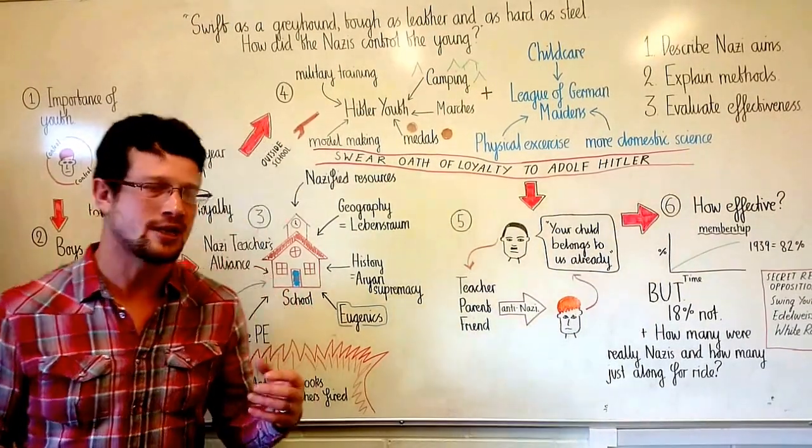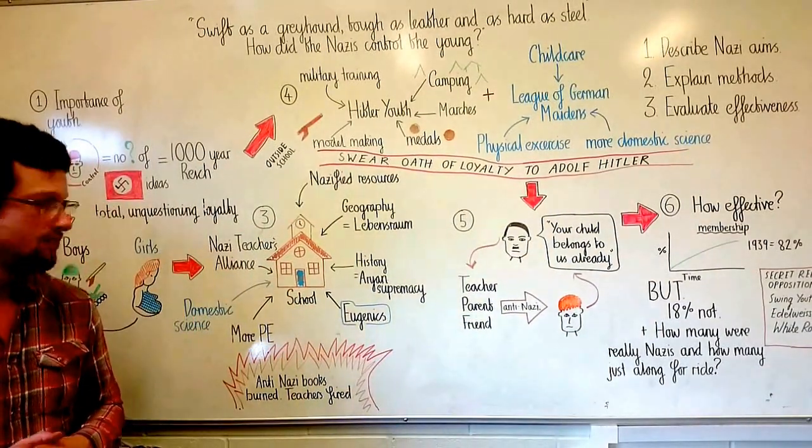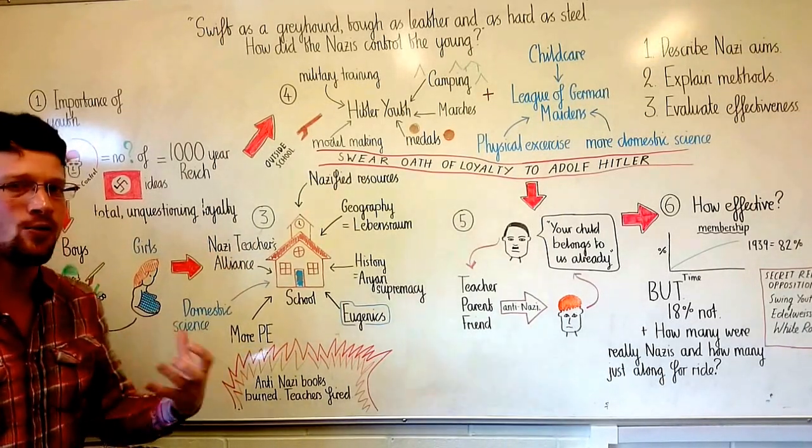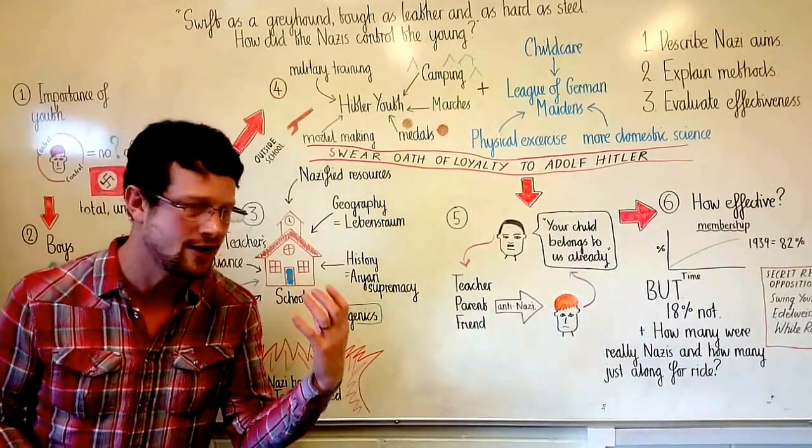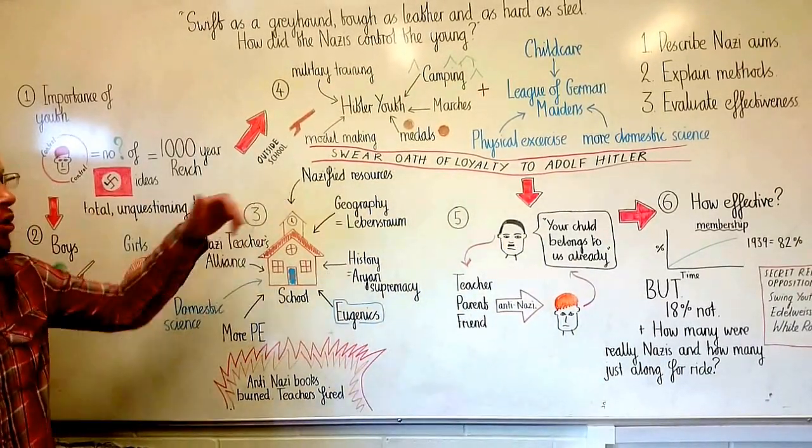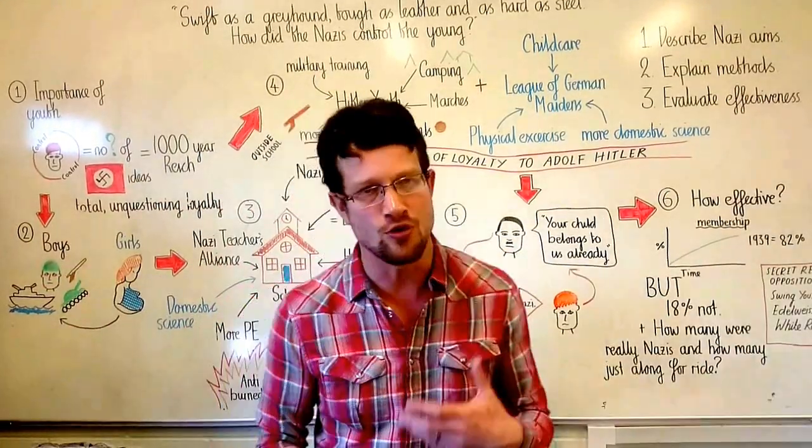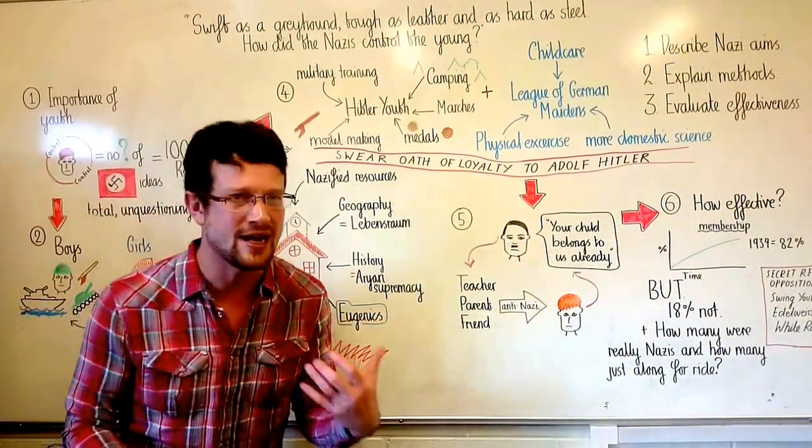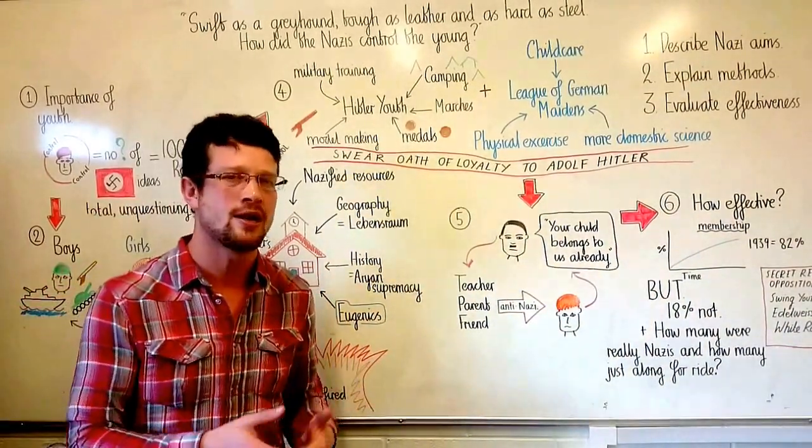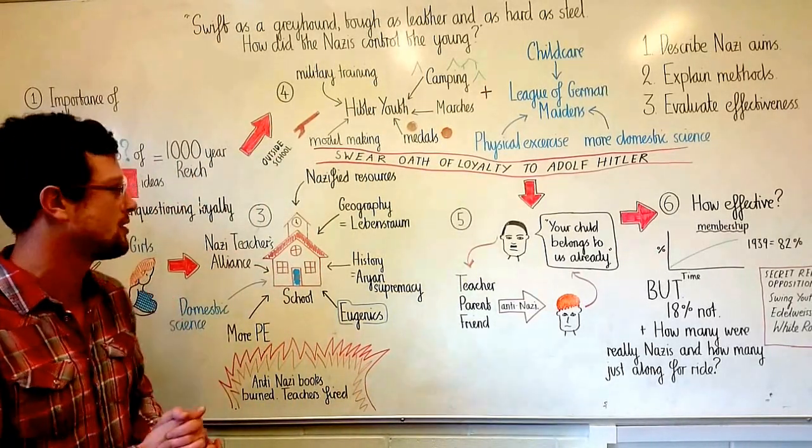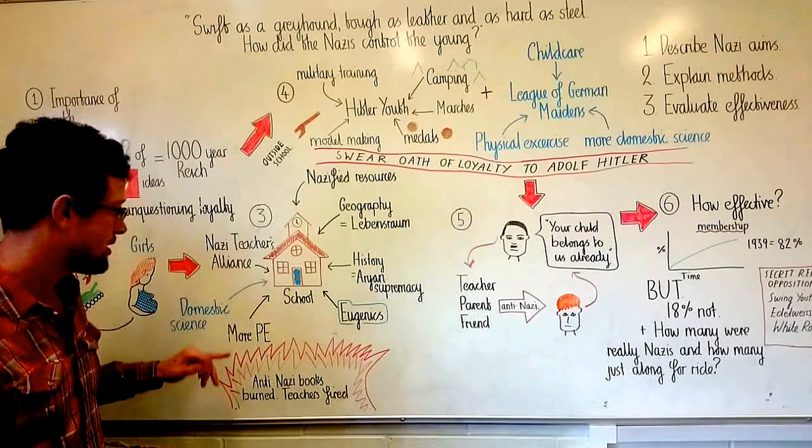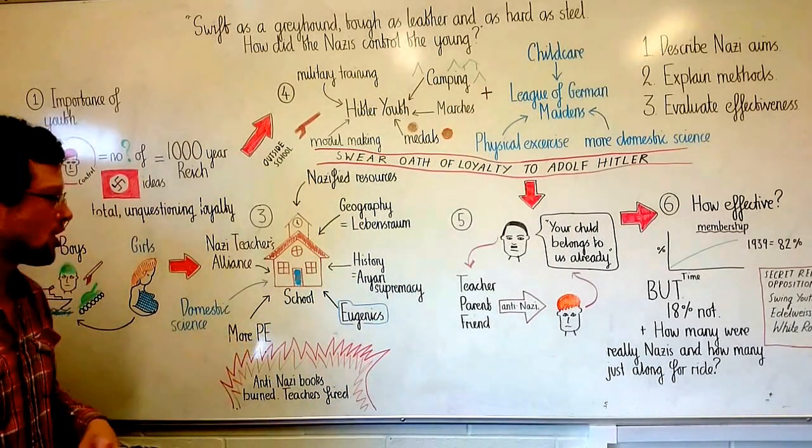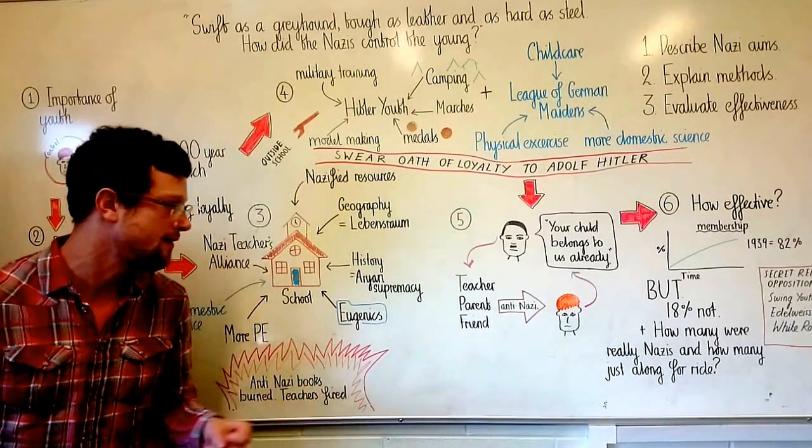The first place that control of both boys and girls started was at school. All German teachers were forced to join the Nazi Teachers Alliance, and by doing this they were agreeing that they would teach the new Nazified curriculum. All resources used in schools had to be approved by the Nazis and often had implicit messages designed to indoctrinate young people into agreeing with the Nazis' point of view. The subjects were also changed. There was much more emphasis on PE for boys. This was to make them strong potential soldiers, and for girls to make them healthier so they were more likely to have healthy babies.